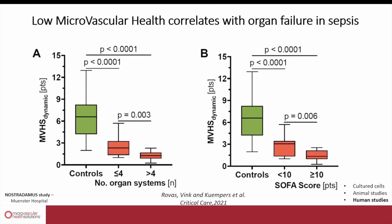Furthermore, in addition to just counting the number of capillaries, by combining that with measuring the level of glycocalyx damage using the GlycoCheck device, we were able to develop what's called a microvascular health score. This slide shows the normal range of microvascular health scores in healthy controls, ranging between four and eight, as well as individuals with compromised microvascular health correlating with the number of organs that are failing.